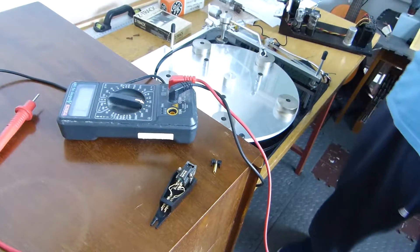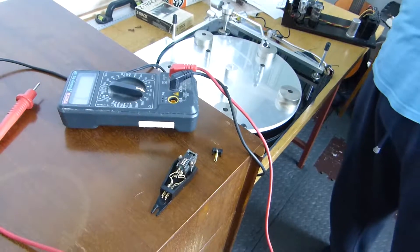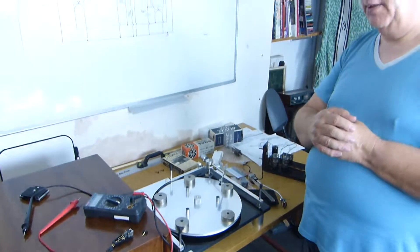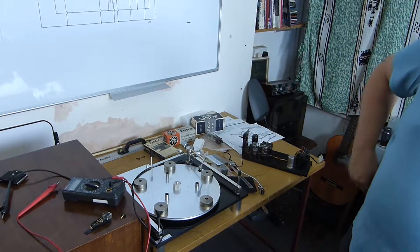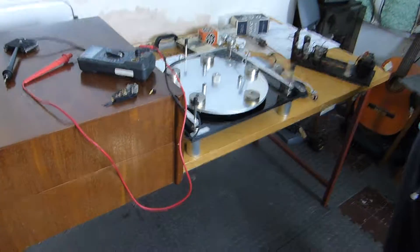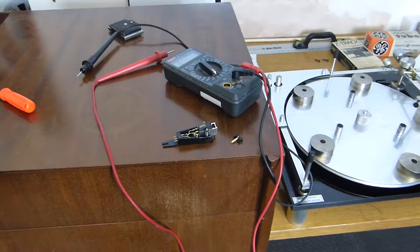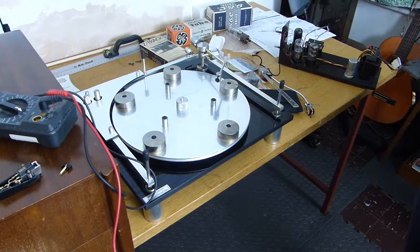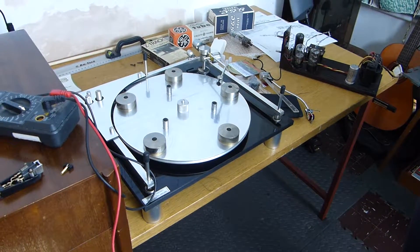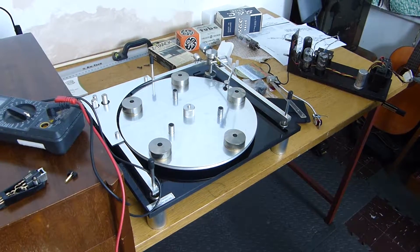Shure don't do any—Shures are nearly all this type. They're called moving magnet. That's the other one. Audio-Technica do VMS, the Variable Magnetic Shunt. That's interesting—one day we will have a look at that maybe.